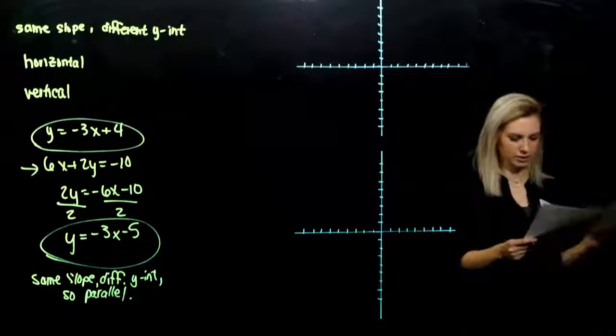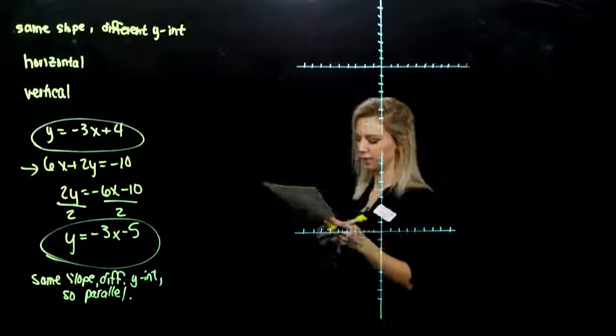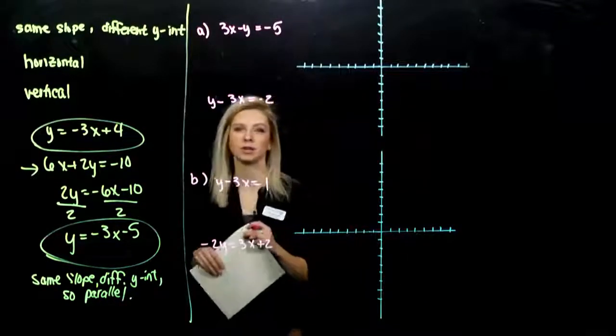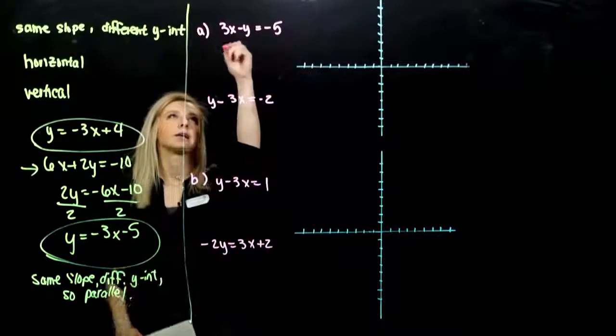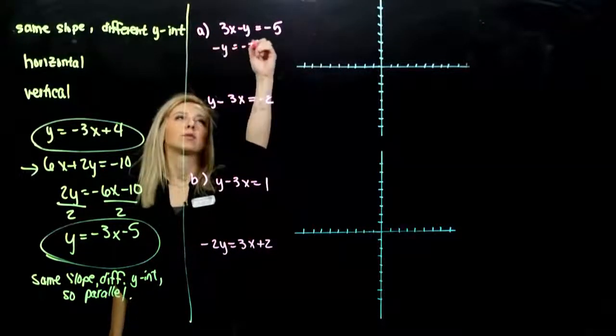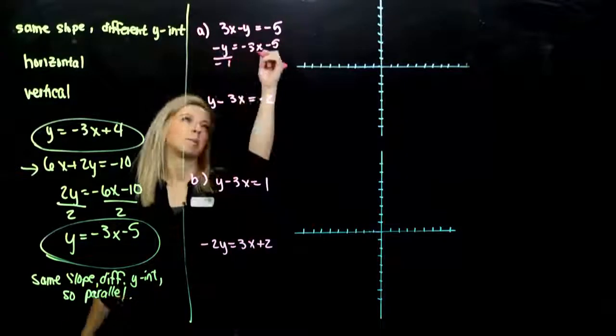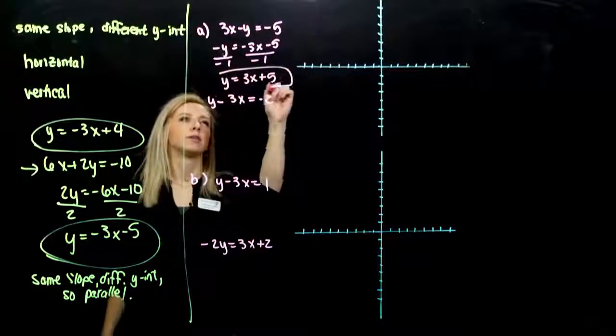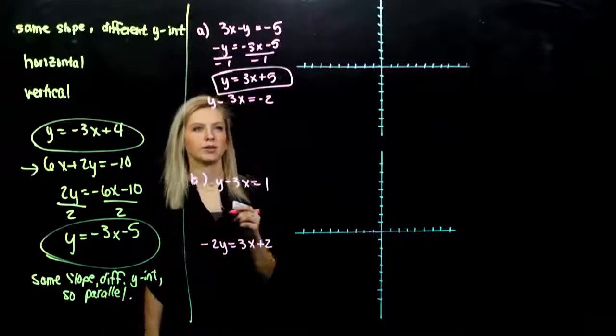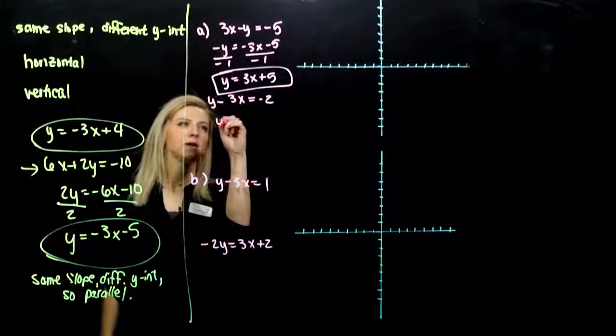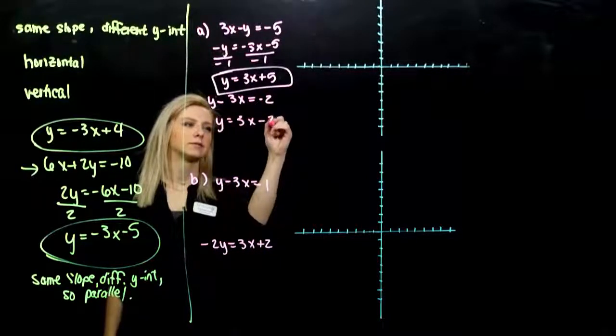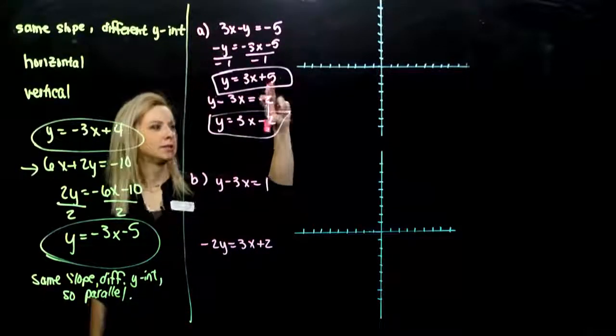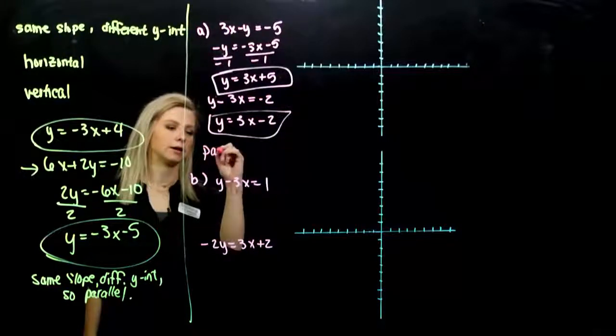So one for you. Just kidding, two for you. Determine whether the graphs of each pair of equations are parallel. First example, we needed to get them both into that slope-intercept form. So looking at the first one, what had to happen? Subtract 3x from both sides. Divide or multiply by negative. So we got y is 3x plus 5. Solve the first one for the slope-intercept form. The second one is pretty simple. We just have to add 3x to both sides. So what about that relationship between these two lines? They have the same slope, different y-intercepts, so the lines are parallel.